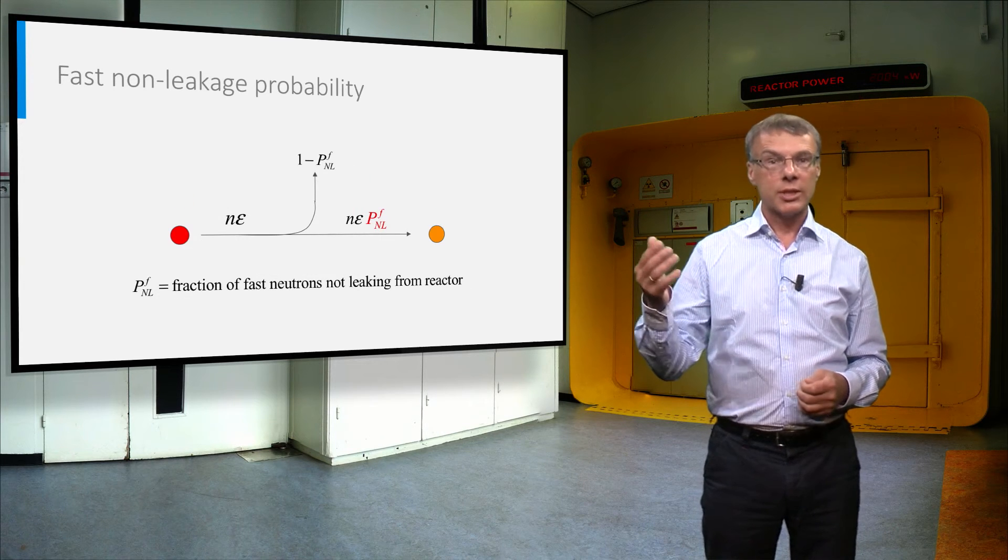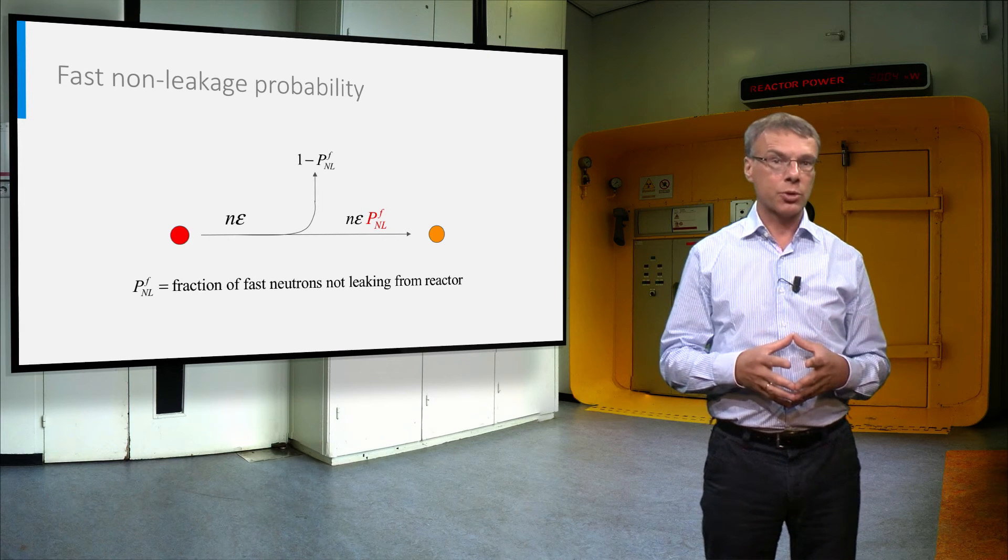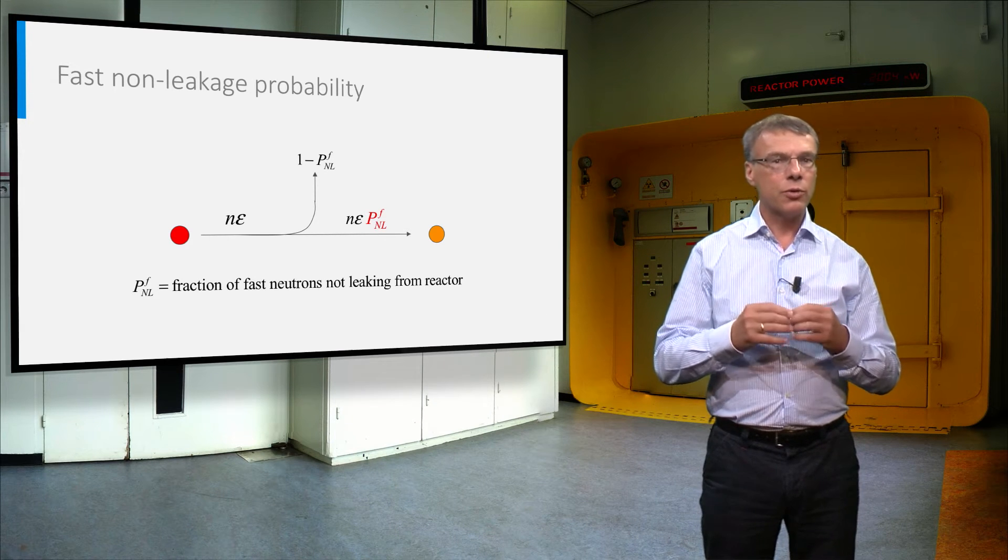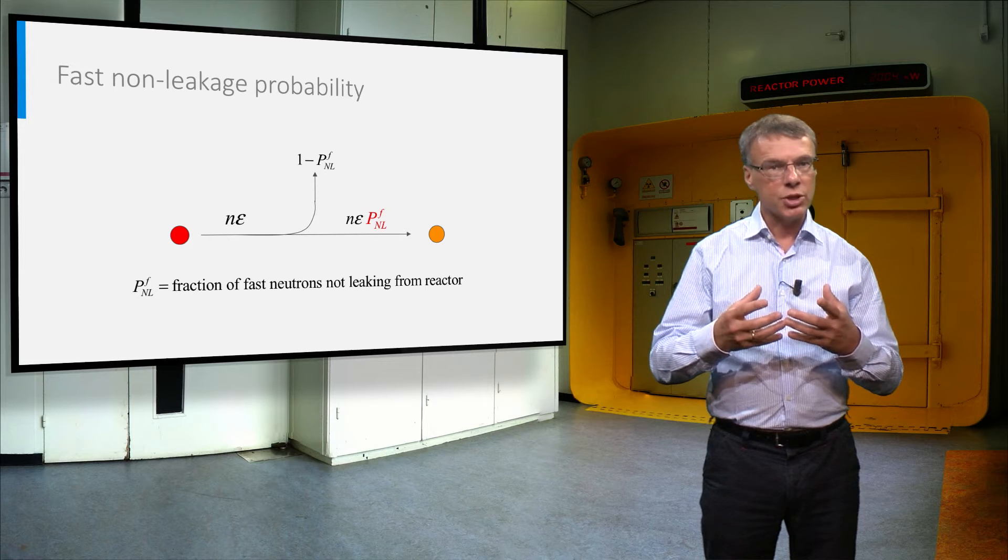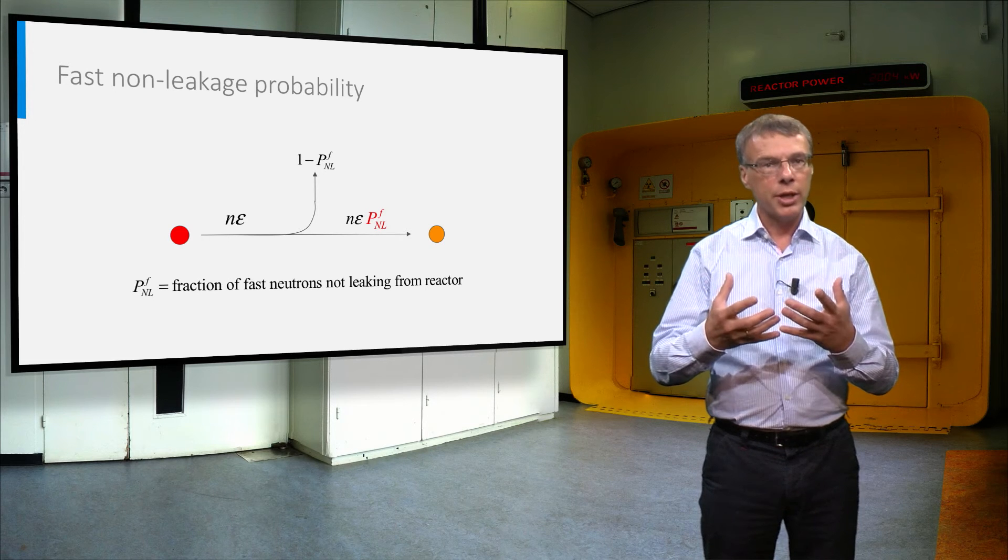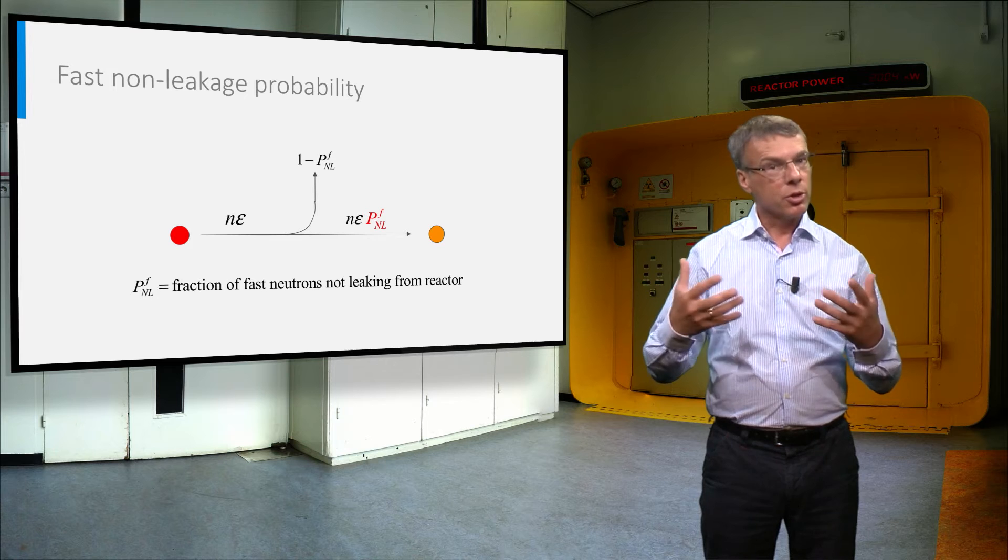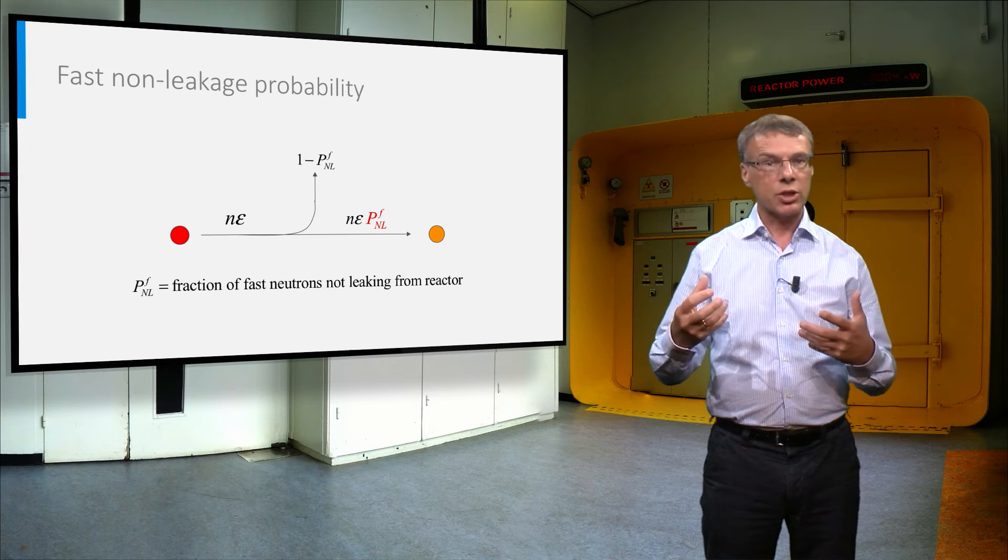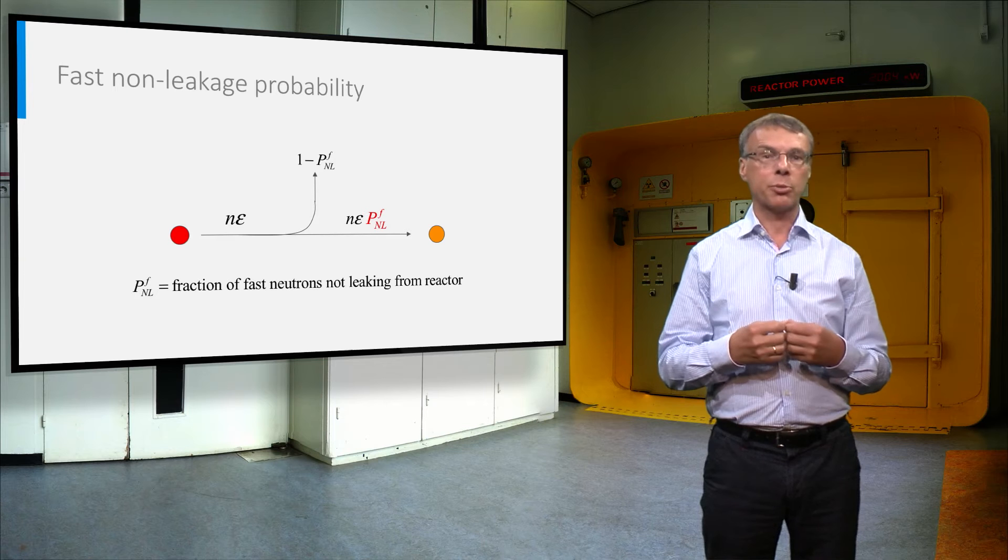When the neutrons still have a high energy, they can escape from the reactor core. The fraction of neutrons that survives leakage is called the non-leakage probability. And because we speak here about fast neutrons, this fraction is called the fast non-leakage probability.